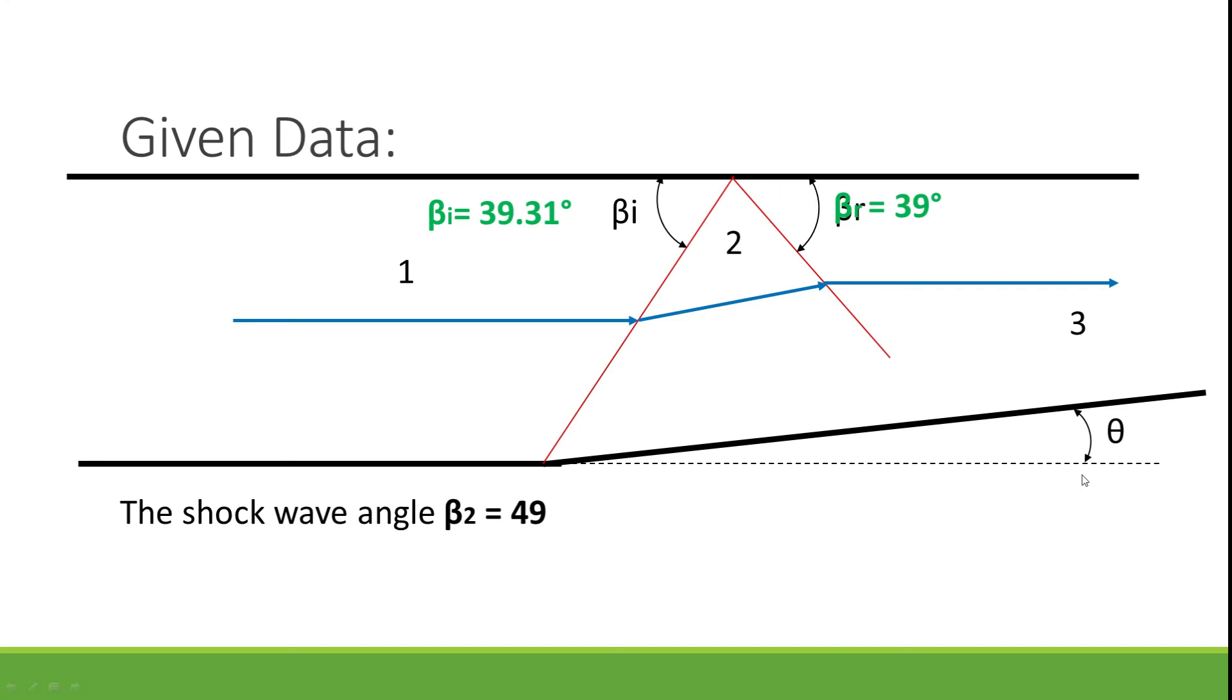To get our reflected shock wave angle, the value is around 49 minus 10, approximately we are getting around 39 degrees. So our answer states that the reflected shock wave angle is going to be 39 degrees and the Mach number is around 1.3.